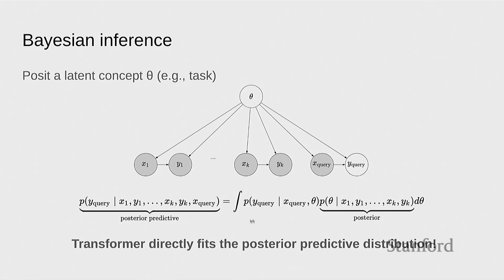This is the posterior predictive distribution. It doesn't have theta in it because it's been marginalized out — so it just looks like x1, y1, ..., xk, yk, x-query, and probability distribution of y-query. And this is exactly the same form we've been playing around with when we talk about doing in-context learning. So through this lens, what we can think about these transformers doing is that they're trying to fit this posterior predictive distribution directly. But there could be underlying latent structure that the transformer may have some implicit notion of — or may not.